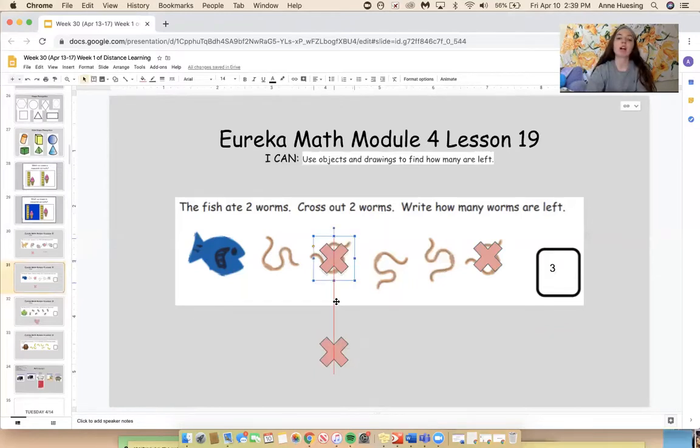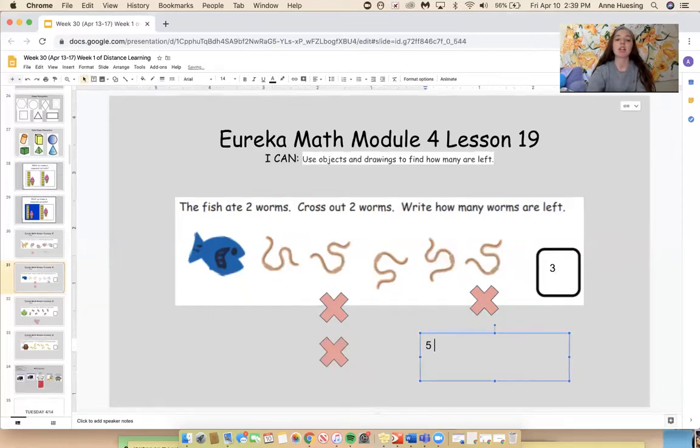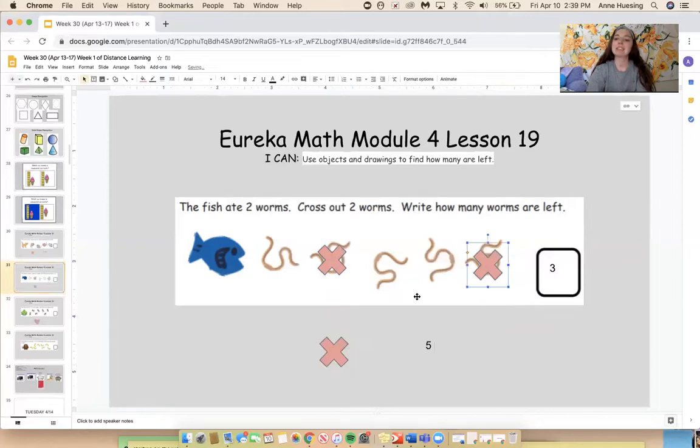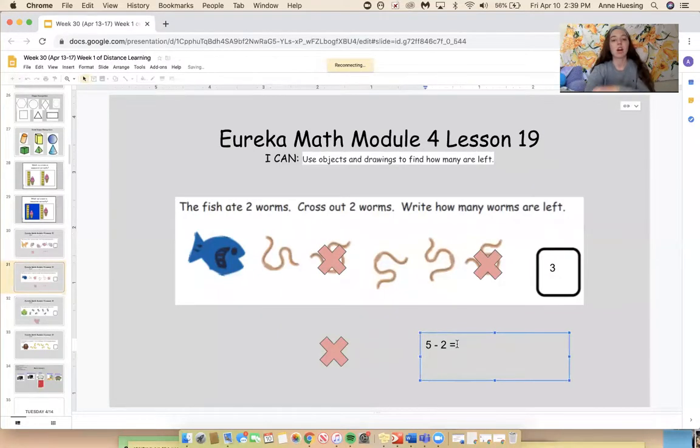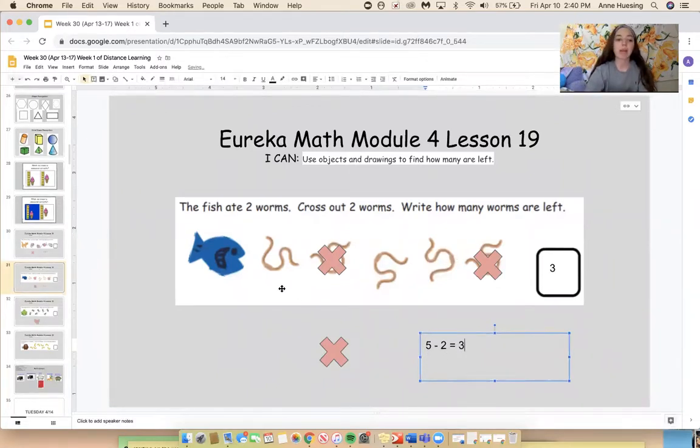Since we were so smart and got that so easily, let's go ahead and take it a step further and make a number sentence. So we started with how many worms? Before we cross them off, how many did we have? Let's count together. One, two, three, four, five. So we have to start with the first big number. Then how many did we cross out? How many did the fish eat? He ate two. When he eats worms, does that mean we're adding more worms? Or does that mean we're taking away worms? Taking away. Okay, so is this the right thing to do right here? Is this take away? Oh, no. Silly Ms. Yousing. This is take away. Thank you guys for helping me. So five, take away. How many did we cross out again? Two equals. Our equal sign is this one right here. How many do we have left? Three. Exactly. So you would see five take away two equals three. Thank you for your patience. Awesome.